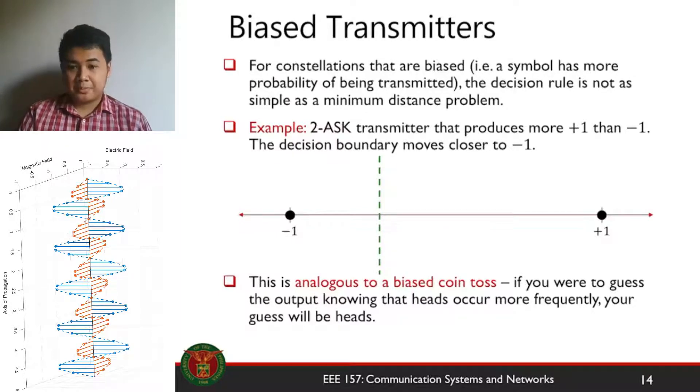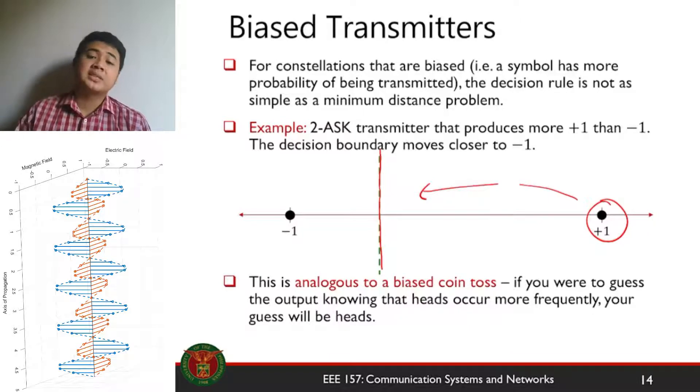An example would be this. If your transmitter produces more plus one for 2-ASK, then the receiver will decide to move the decision boundary further away from plus one. Since plus one has more chance of occurring, the receiver will guess that maybe the next one is plus one. Therefore, this symbol is transmitted. This is the optimum boundary between the two since plus one occurs more. And this is actually what happens in real life.